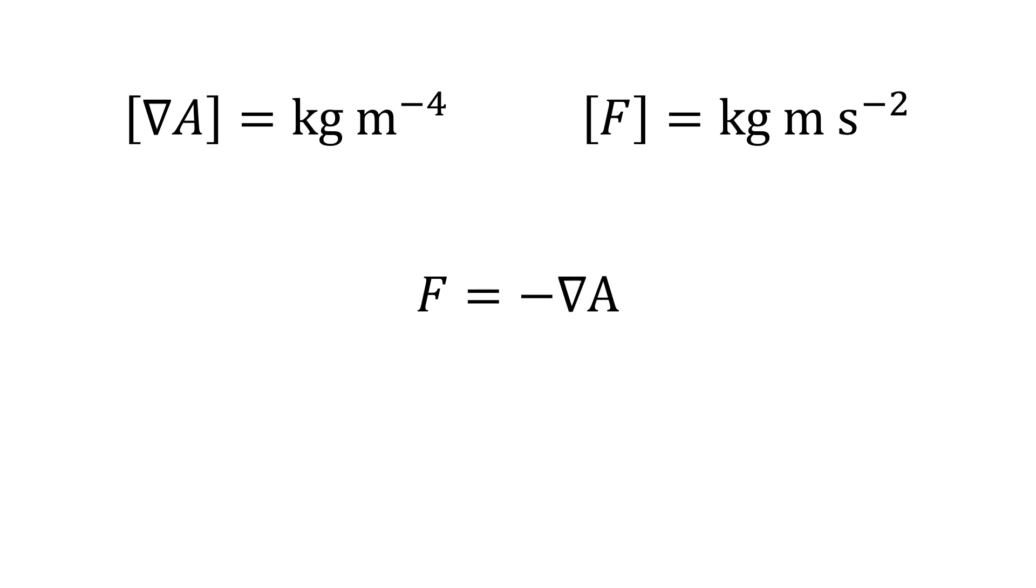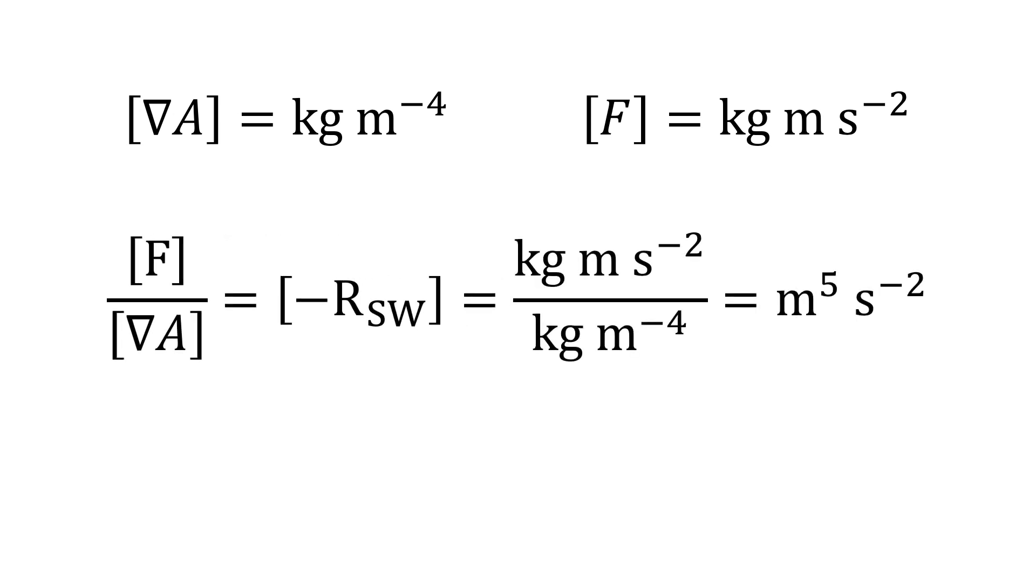But here comes the issue. Force has units of kilogram meters per second squared. So the expression for force being equal to the negative of the gradient of A is not correct unless we add this coefficient to fix the units, and we can divide one side of that expression by the other to get the units of that coefficient. And we find that this coefficient then has units of meters to the fifth power divided by seconds squared.